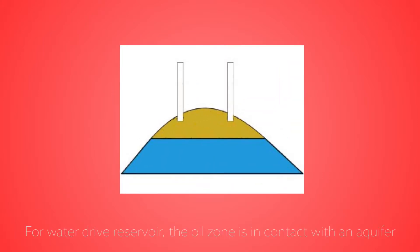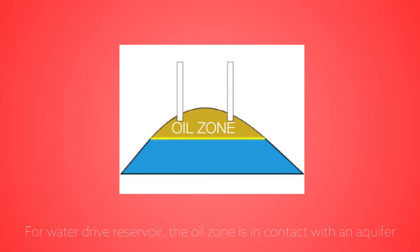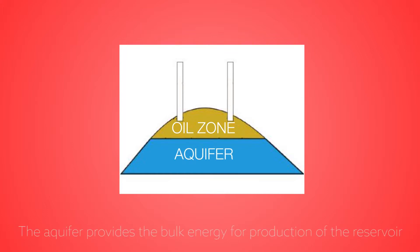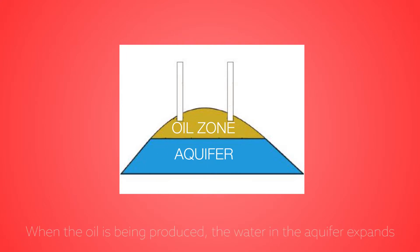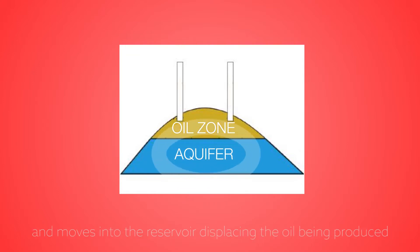For a water drive reservoir, the oil zone is in contact with an aquifer. The aquifer provides the bulk energy for production of the reservoir. When the oil is being produced, the water in the aquifer expands and moves into the reservoir displacing the oil being produced.